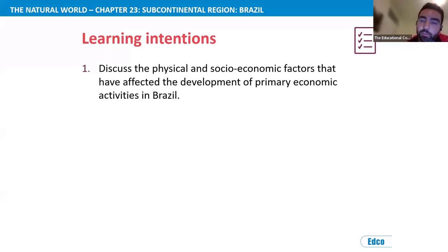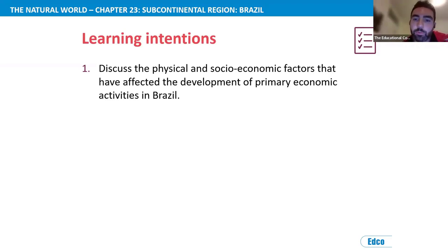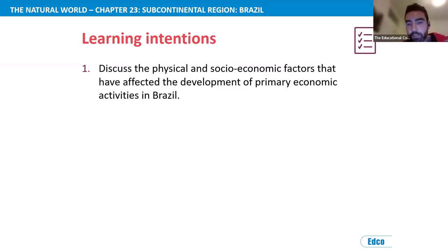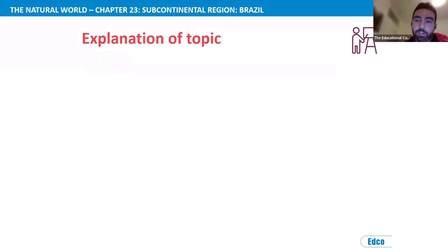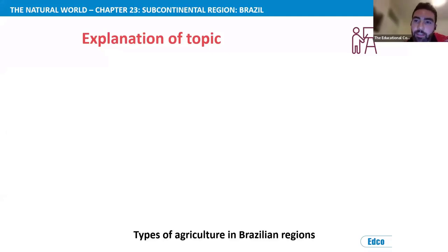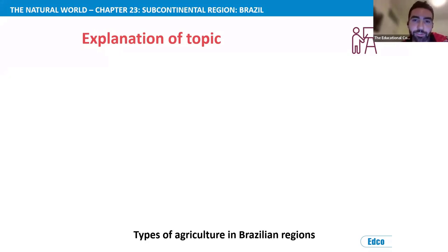Then we go to learning intentions: today we're covering primary economic activities in Brazil — specifically to discuss the physical and socio-economic factors that have affected their development. I check for understanding immediately: cold calling students with no hands-up — you can only raise your hand to ask a question, not answer one. So: what is a physical factor, Carl? What does socio-economic refer to, Rebecca? If we're dealing with primary economic activities, give me two examples. Check understanding of the learning intention before moving on.